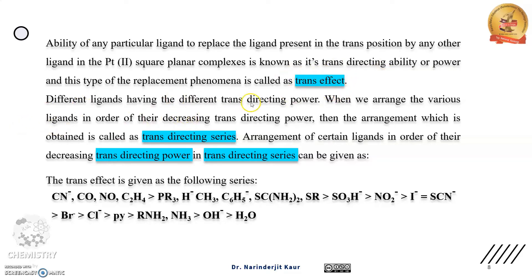Different ligands have different trans directing power. When we arrange the various ligands in order of their decreasing trans directing power, the arrangement obtained is called the trans directing series. यह जो arrangement है, different ligands की in order of their decreasing trans directing power, in trans directing series is given as this.